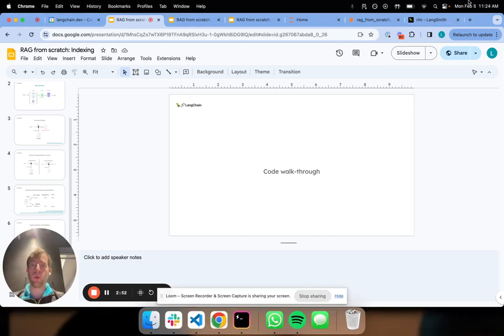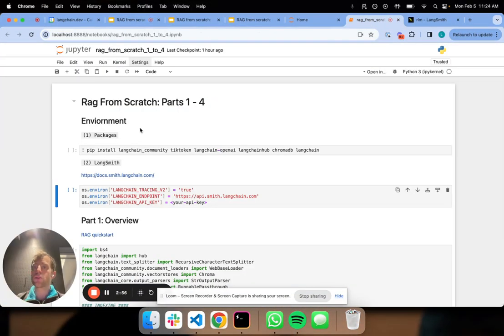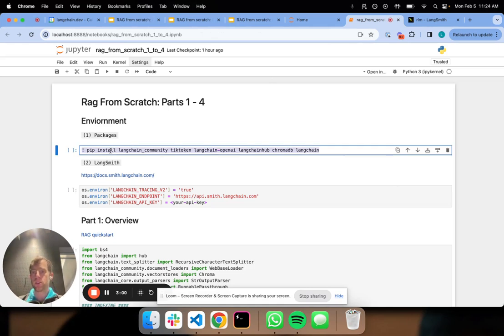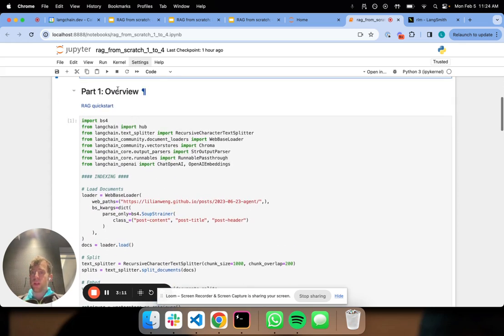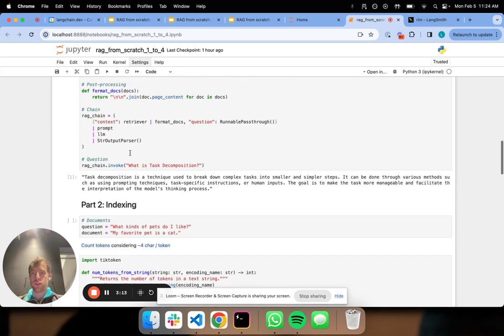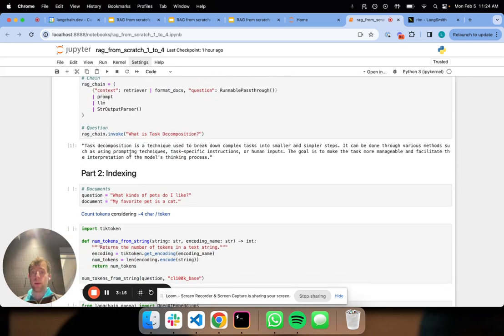And let's just do a quick code walkthrough on some of these points. So I have my notebook here. Now I've set a few API keys for Langsmith, which are very useful for tracing, which we'll see shortly. Previously, I walked through this quick start that just showed overall how to lay out these RAG pipelines.